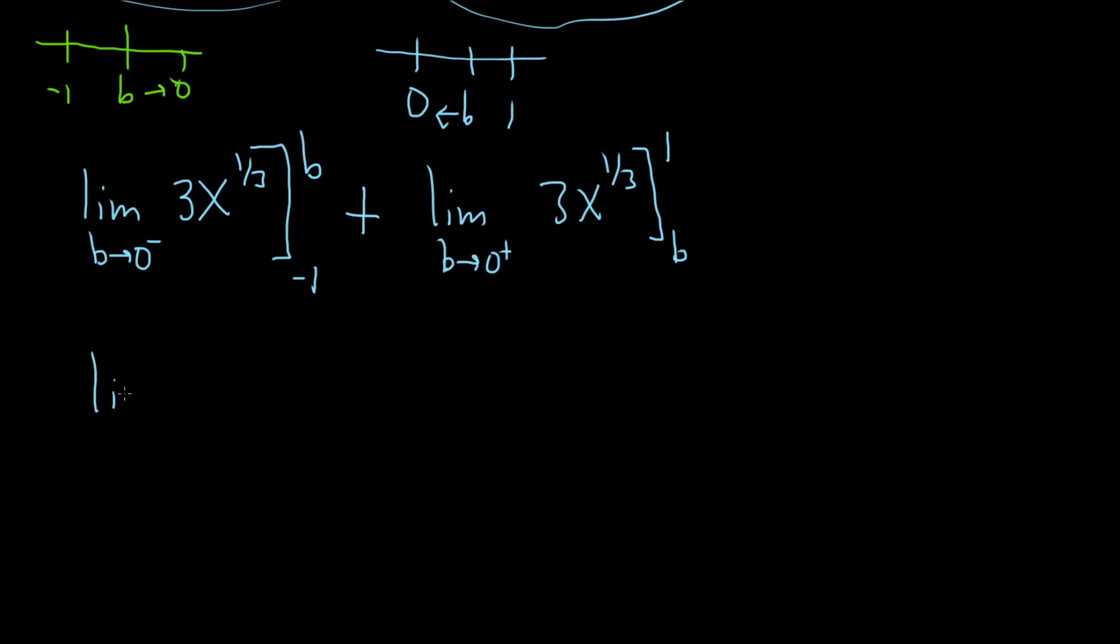So this is equal to the limit as b approaches 0 from the left. You take the b and you plug it in. So it'll be 3 times b to the 1 third. Then you subtract and plug in the negative 1. 3 times negative 1 to the 1 third. Then plus the limit as b approaches 0 from the right. So you plug in 1. We get 3 times 1 to the 1 third, minus 3 times b to the 1 third.